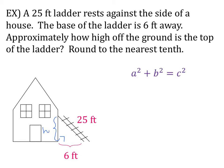So I'm going to write down my Pythagorean theorem. A squared plus B squared equals C squared. So H squared plus 6 squared equals 25 squared. I know that my ladder is my hypotenuse because it's across from the right angle. So H squared plus 36 equals 625.